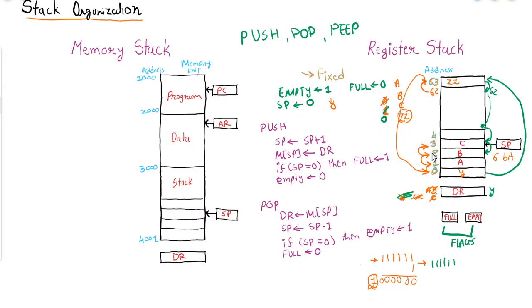Continuing the pop simulation: when SP is at 2 (pointing to B), DR = M[SP] retrieves B. SP = SP - 1 = 1. SP is not 0, so full remains 0. Popping again retrieves A, SP = 1 - 1 = 0. Now if SP equals 0, empty is set to 1, meaning all elements have been popped. Full is set to 0 and empty is set to 1.